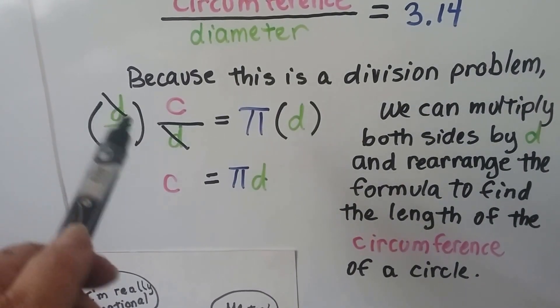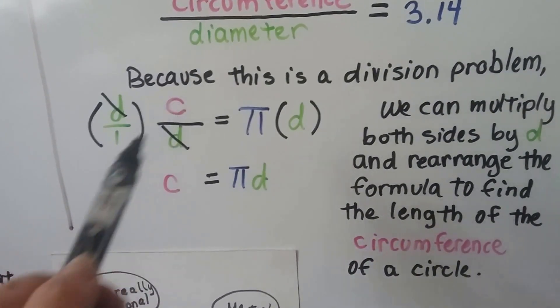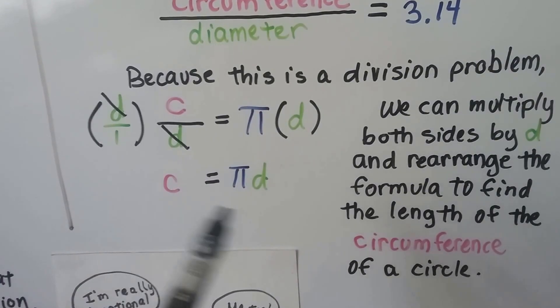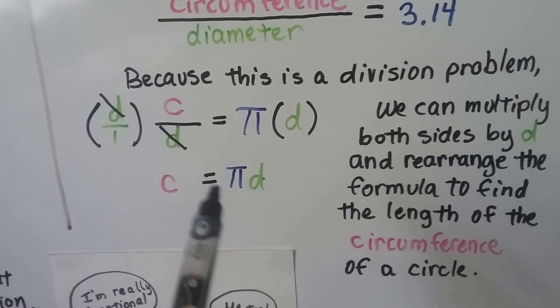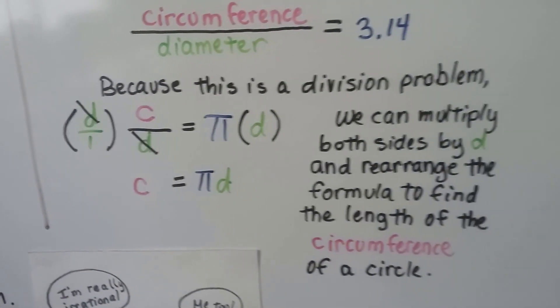We get this d cancels out this d, and we get c over 1. Well, that's just a c. And on this side, we get pi times the diameter, pi times d. So the circumference equals pi times the diameter.